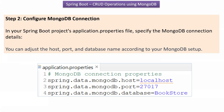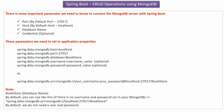Step two is to configure the MongoDB database connection. In the Spring Boot project's application.properties file, we have to specify the MongoDB connection details. The host is localhost and the port number is 27017, which is the default port of MongoDB. The database name is bookstore. Important parameters to know are: port number (default 27017), host (default localhost), database name, and credential. Credentials are optional — only required if the MongoDB server is configured with a username and password.